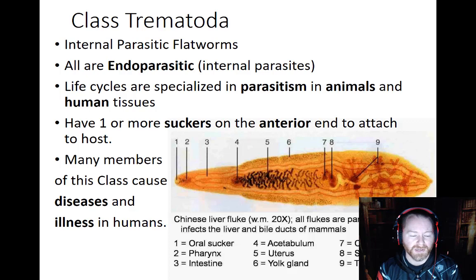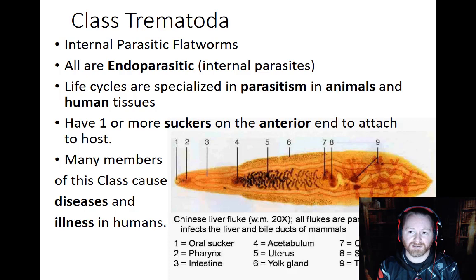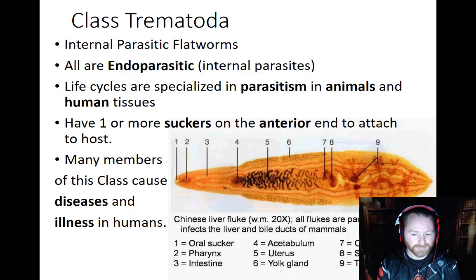A lot of these will have at least one sucker on the anterior end, which it uses to attach to its host. One of the big things about trematodes is that a lot of the members of this class are actually culprits for causing disease in humans. We do know a lot about many of the species in this class because we have to deal with them on a medical basis.